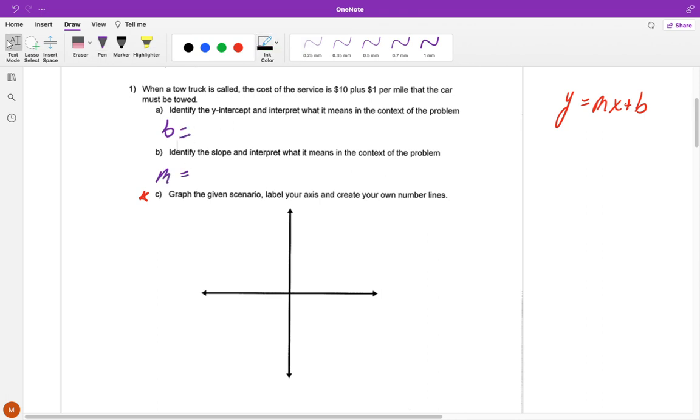Our slope is the rate of change. So we know it's change in y over change in x, or rise over run. And when we see $1 per mile, that's saying we're traveling $1 for every one mile. So that's telling us it is a rate of change when we see that per mile. And since it's 1, we know our slope is equal to 1.